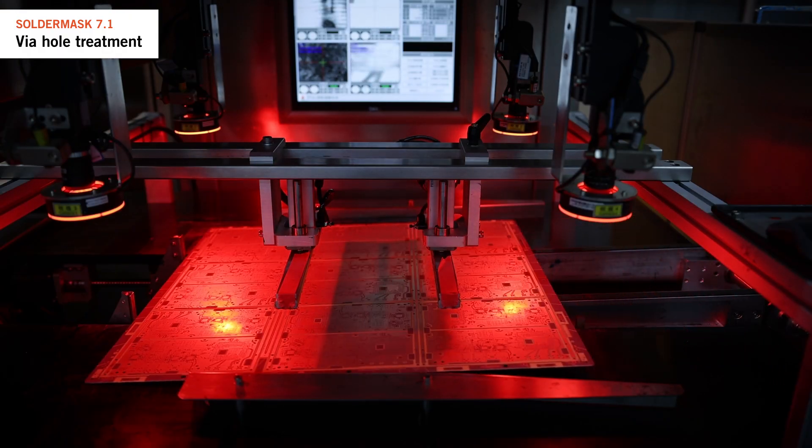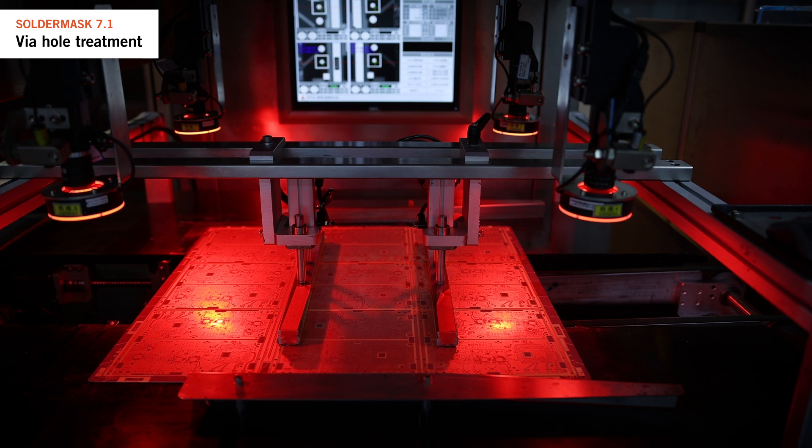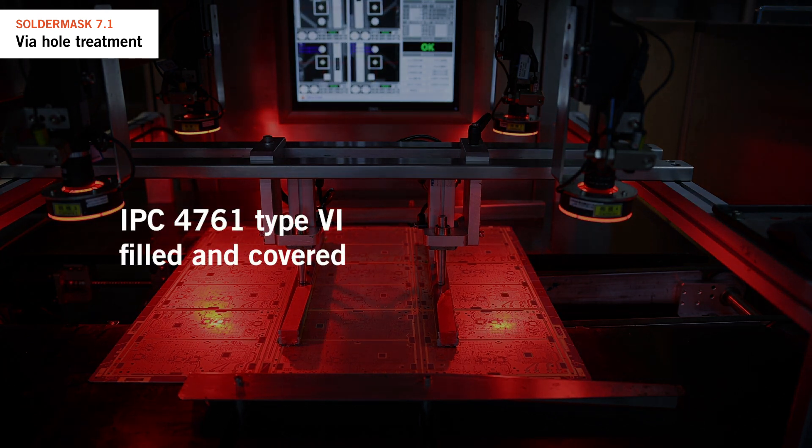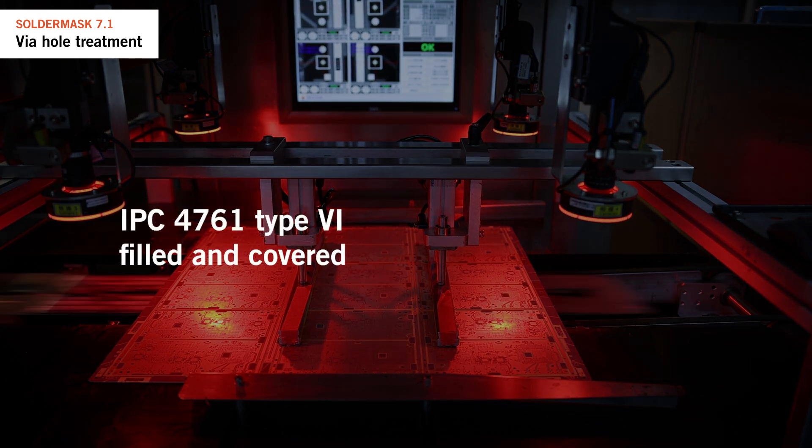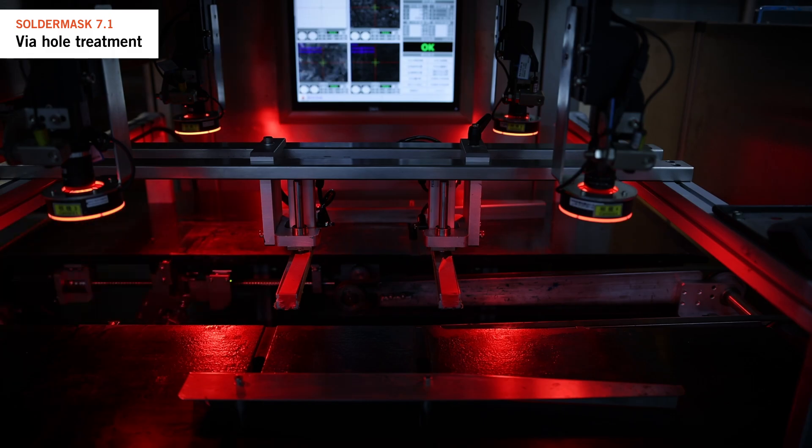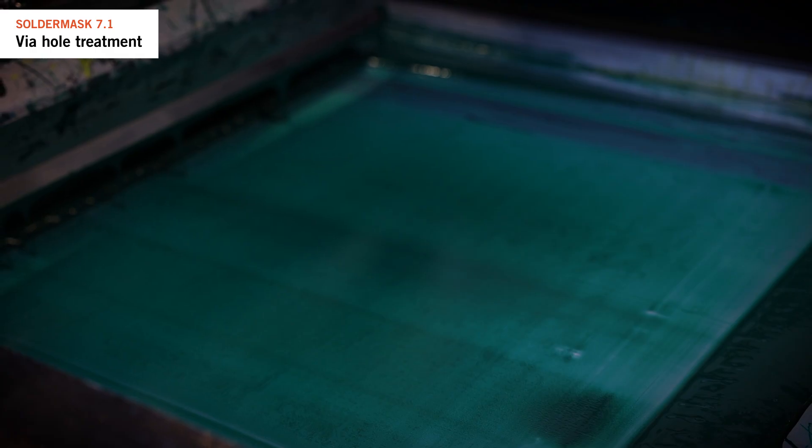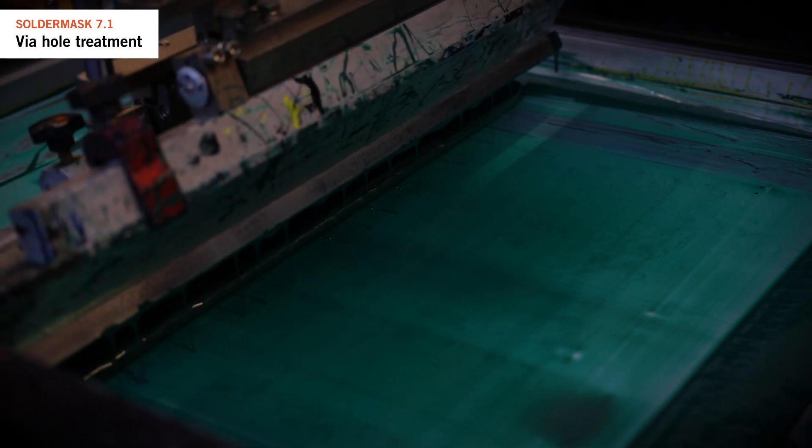To achieve this, we fill the via holes in accordance with the IPC 4761 guideline, specifically type 6 filling. We usually use solder mask ink or a special via plugging ink along with a prepared aluminum stencil. The stencil has holes that match the via holes we want to fill.